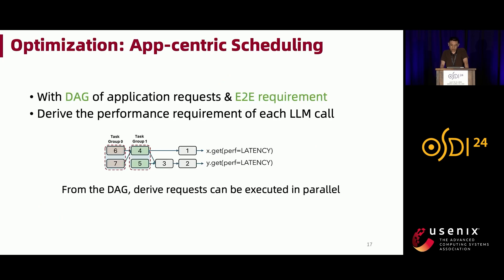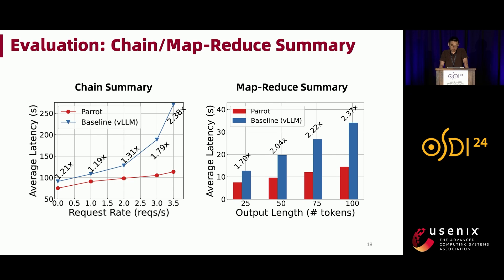With the DAG of LLM applications, we derive the scheduling preference of each individual request from the end-to-end optimization criteria, so we can optimize end-to-end performance with a new scheduling policy. From the DAG, we can derive which requests can be executed in parallel with larger batch sizes to optimize end-to-end latency. For chain-style summary applications like Teams meeting recap, Parrot can achieve up to 2.3x speedup due to saved excessive network latency and queuing delay. For MapReduce-style summary applications, Parrot can achieve over 2x speedup due to better end-to-end scheduling decisions that use a large batch size for the Map stage.